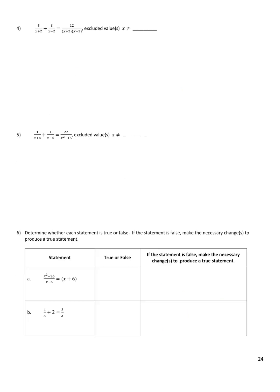For number 4, my common denominator is x plus 2 times x minus 2. My excluded values are going to be negative 2 and positive 2. If I put negative 2 in for x, this denominator would be 0, so I can't have negative 2. And if I put 2 in for x, this denominator would be 0, so I can't put 2 in either. I get the same two excluded values when I look at the third fraction.